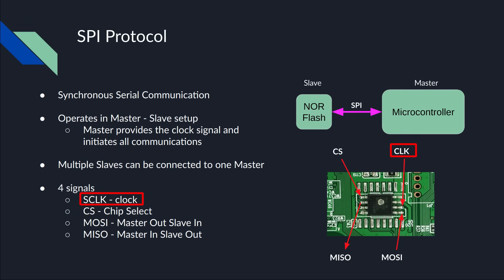The first wire is SClock — the clock signal. The second is CS, chip select, which acts like an enable button for the SPI chip, turning it on. The third is MOSI — Master Out, Slave In — where the chip receives data from the master.